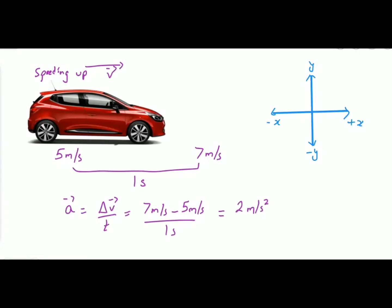If the car is moving towards the positive x-axis and speeding up, meaning velocity is increasing, then acceleration will be positive. Its direction will be the same as the direction of velocity. This is the case of positive acceleration. Along the positive x-axis the velocity is positive, and along the negative x-axis the velocity is negative.